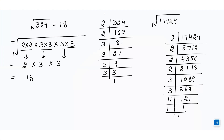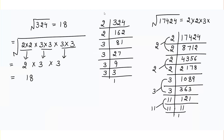To find the square root, I make the pairs: 1st pair of 2, 2nd pair of 2, 3rd pair of 3, 4th pair of 11. From each pair I write the number once: 2, 2, 3, 11. The square root of 17,424 is 2 × 2 × 3 × 11, which equals 132.